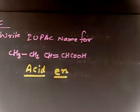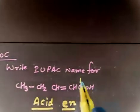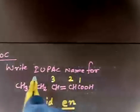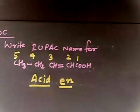Look, acid is of course given first priority. So, number from this side. So, this is 1, this is 2, this is 3, 4, 5. So, parent chain is of 5 carbon. So, this is a pentane derivative.